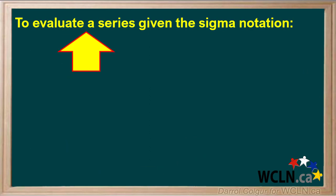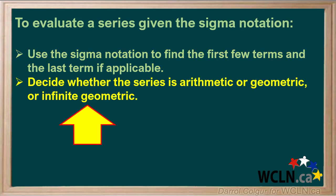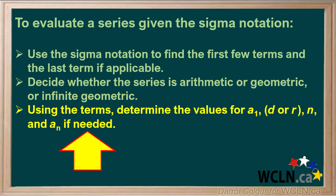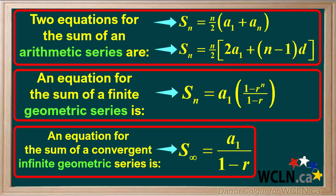In summary, we can use the following steps to evaluate a series given the sigma notation. Start by using the sigma notation to find the first few terms and the last term, if applicable. Next, decide whether the series is arithmetic, geometric, or infinite geometric. Then determine the values for a1, d or r, n, and an if needed. Finally, use these values and the appropriate equation to find the sum. It would be good to memorize these equations.